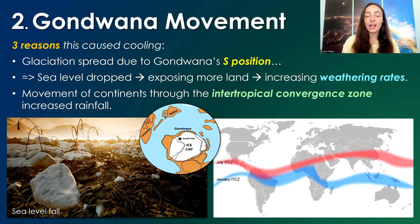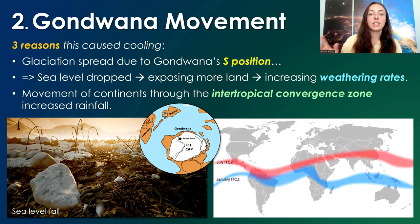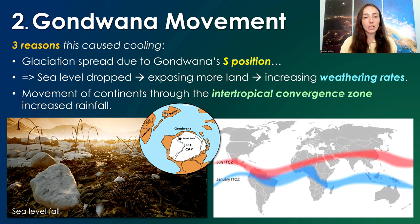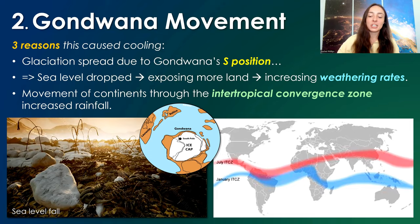This Gondwana movement and increasing weathering rate event led to this cooling. The extinction events were associated with two pulses — one was the cooling and the second was a warming pulse. If you want to know more about how the Ordovician mass extinctions progressed and what climate changes led to what feedbacks, I talk more about that in my Ordovician mass extinction video.